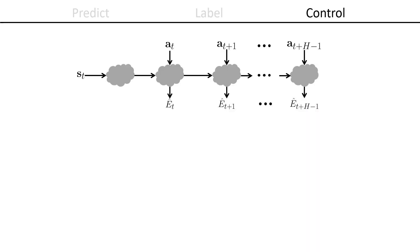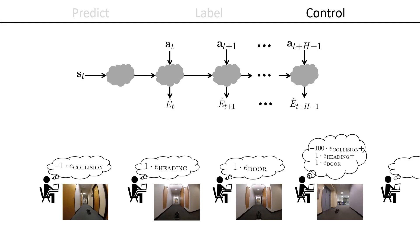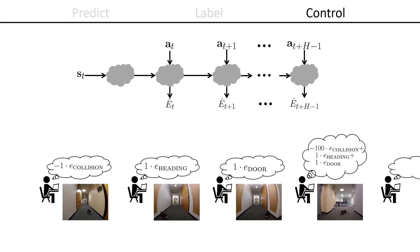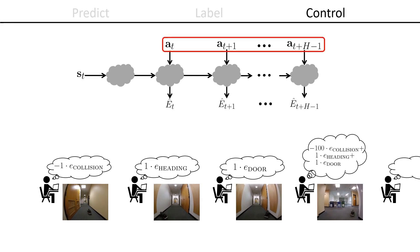Given the trained CAPS model, the engineer can then specify what task the robot should accomplish in terms of the event cues. The robot can then plan and execute actions that maximize this reward function.